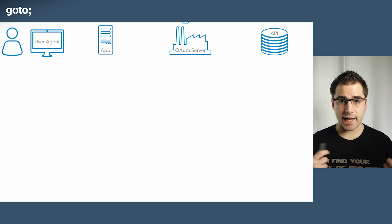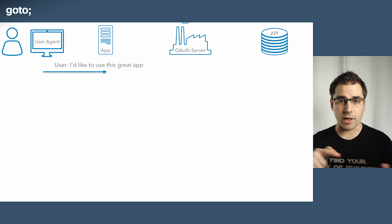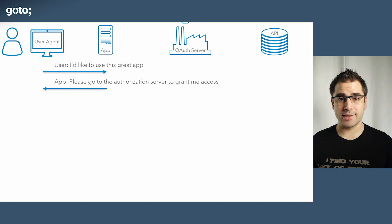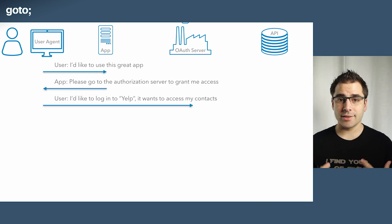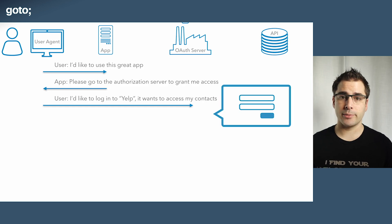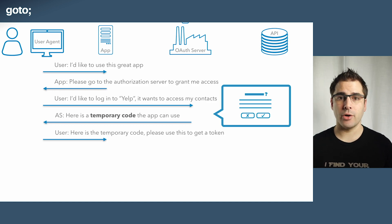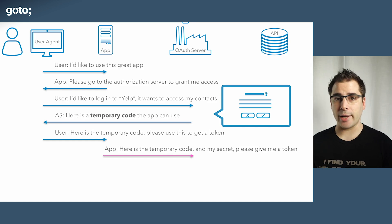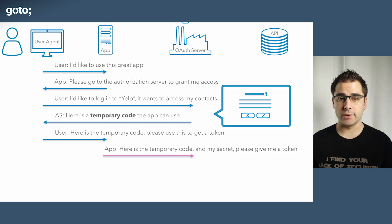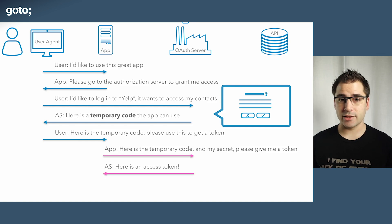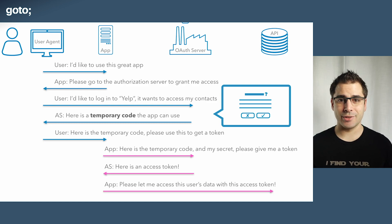The flow starts with the user visiting the application's website or launching the mobile app, and clicking the button that says log in. The app says don't give me your password — go over to the OAuth server and log in there. The user lands at the OAuth server, logs in, and sees a prompt asking do you allow this request? If they click yes, the OAuth server generates a one-time-use authorization code and sends it back in a redirect to the user's browser to deliver back to the application. Once the application has the authorization code, it makes a POST request back to the OAuth server to exchange that code, and can also include its client secret so the OAuth server knows the code wasn't stolen in the redirect step. The OAuth server validates the request, checks the client secret, and returns an access token. Now the application can use the access token to request data from the API.